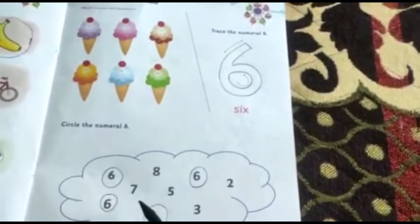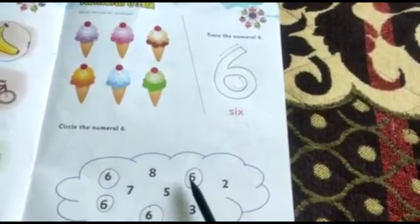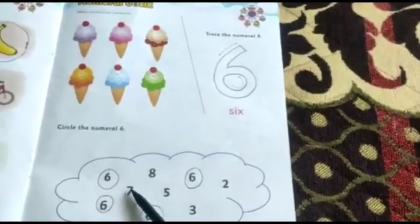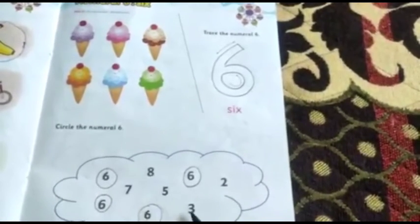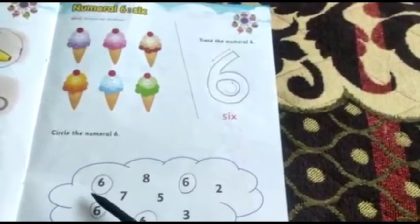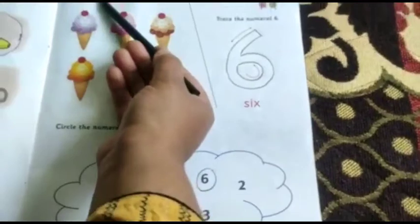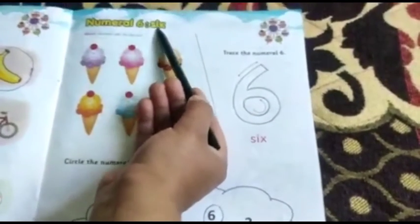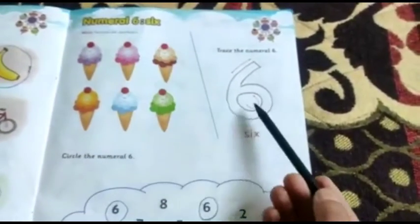What is this? Six, six, six, six. This is seven, eight, five, three, two. These are numerals. We have to circle the numerals. What is this? Numeral six, six, six, six. It is six.